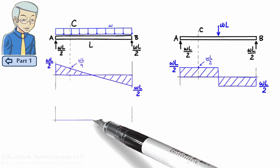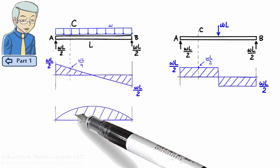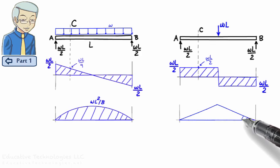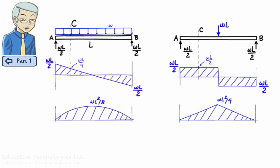Similarly, for bending moment, we have this diagram for the left beam, and this one for the right beam. Again, this shows that bending moment under the distributed load is less than bending moment under the equivalent concentrated load.